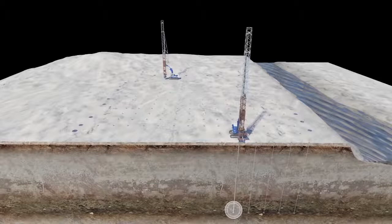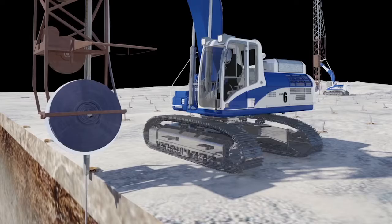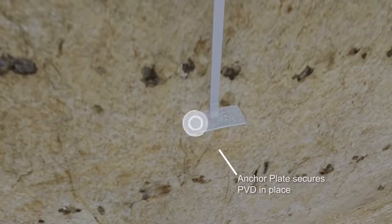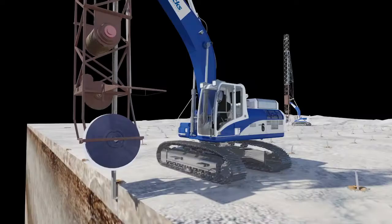Once the PVD has been driven to the correct depth and pressure, the mandrel is then withdrawn back into the mast, leaving the PVD in place. The rig then moves to the next predetermined installation location and continues the process.